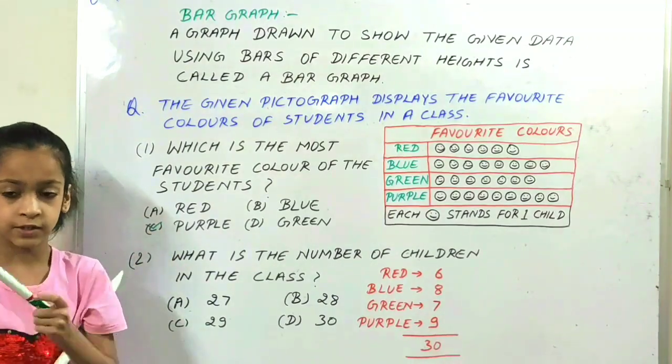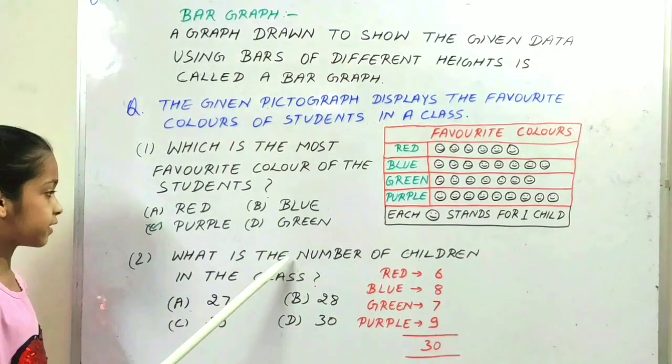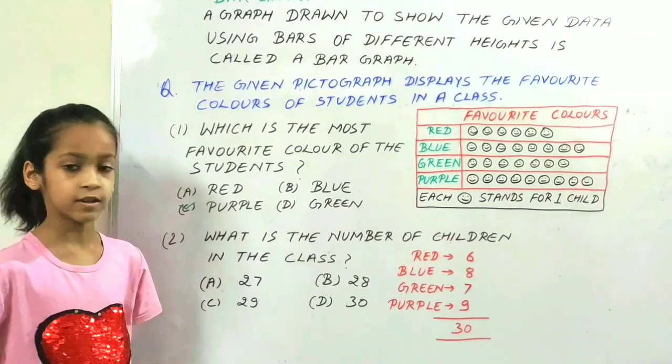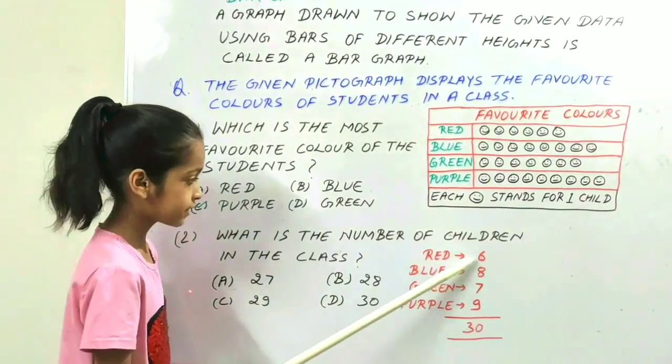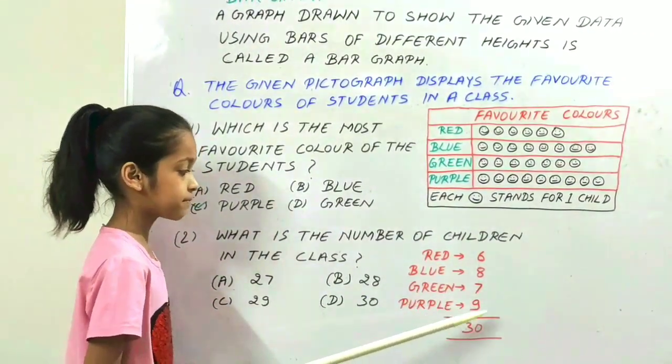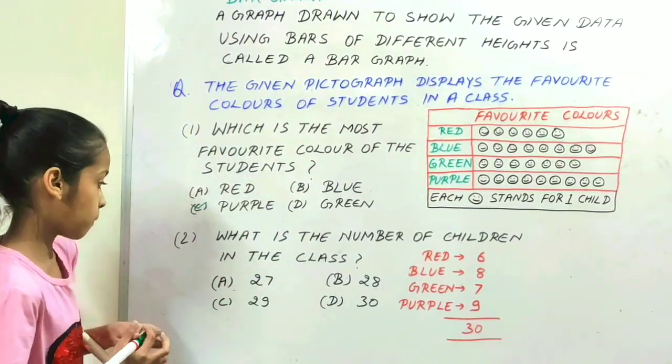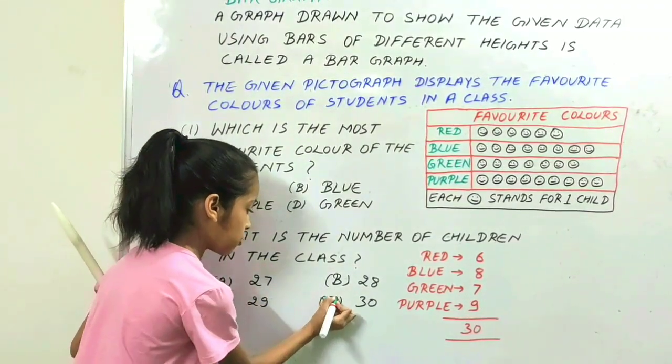Our next question is what is the number of children in the class. 6 plus 8 plus 7 plus 9 is equal to 30. Option D is the right option.